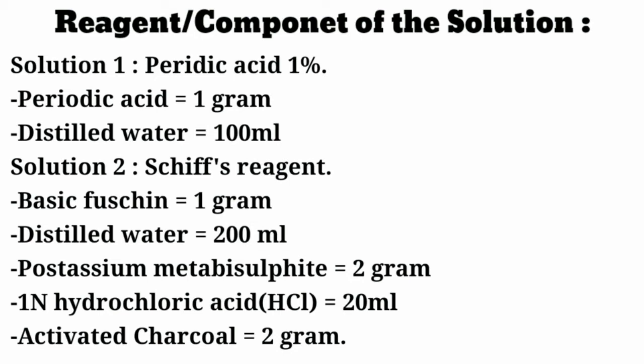Now solution number 2, also called Schiff reagent or Schiff solution. For making solution number 2 we require 5 things: basic fuchsin 1 gram, distilled water 200 ml, potassium metabisulfite 2 gram, 1N hydrochloric acid 20 ml (N is the normality), and activated charcoal 2 gram.